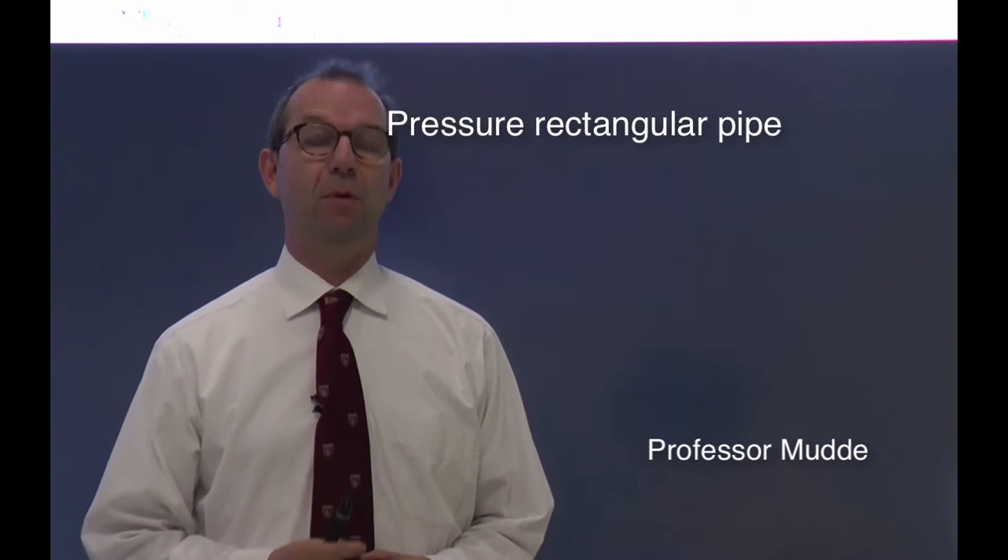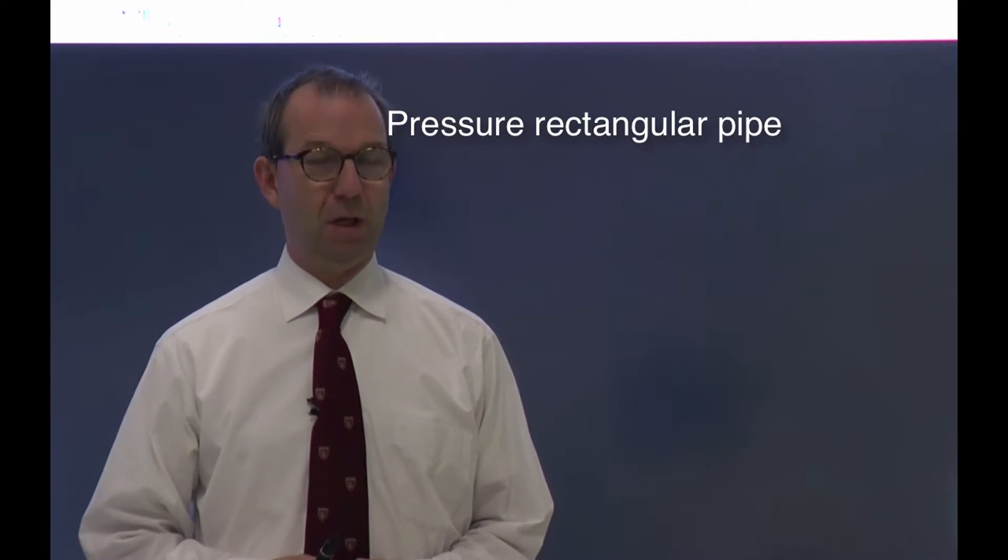Hello, welcome to the SmartBoard. In this example we're going to take a look at the pressure that is needed to have water flowing at a velocity of about 10 centimeter per second through a horizontal pipe.